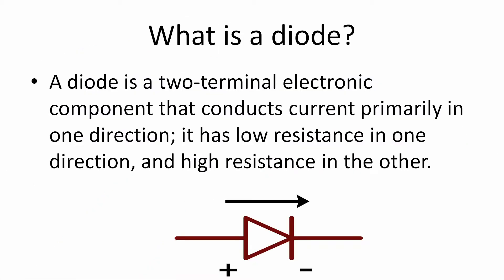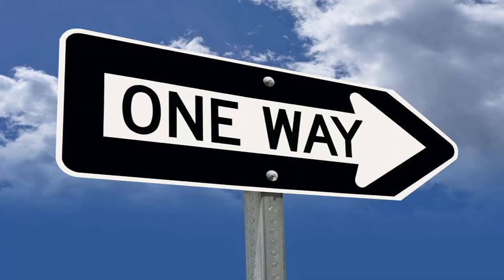So first, what is a diode? A diode is a two-terminal electric component that conducts current primarily in only one direction. It has low resistance in one direction and high resistance on the other. This is the schematic — it looks like a triangle with a little cross on it. The little bar is the negative and the other side is the positive, and current flows from positive to negative.